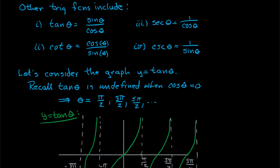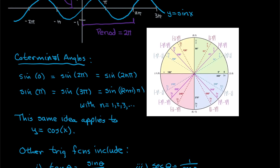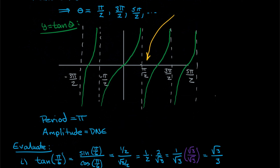Let's take the graph of tangent and consider it. Tangent is sine divided by cosine, so we run into trouble wherever cosine is zero. Going back to the unit circle, cosine — which corresponds to the x value — is zero at π/2 and at 3π/2. So at π/2, tangent is undefined, and at 3π/2 it's undefined. 5π/2 is coterminal with π/2, and you again get an asymptote — undefined.